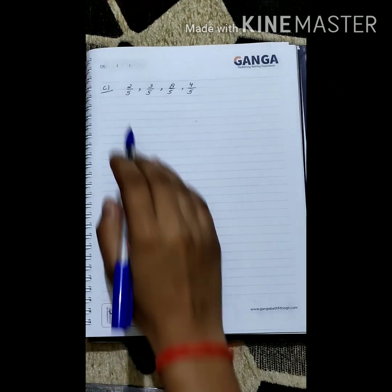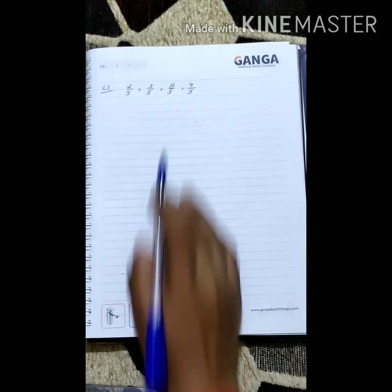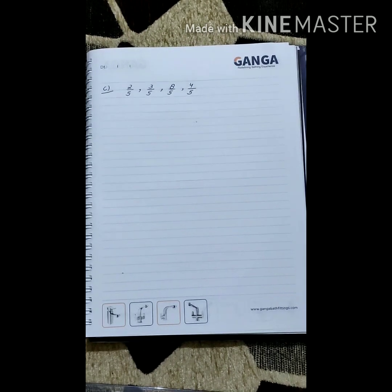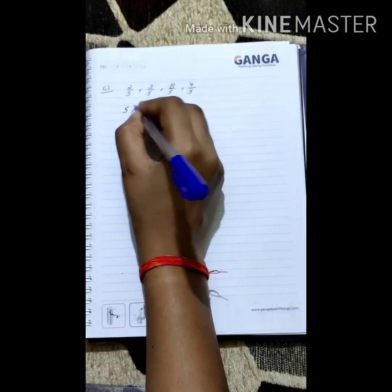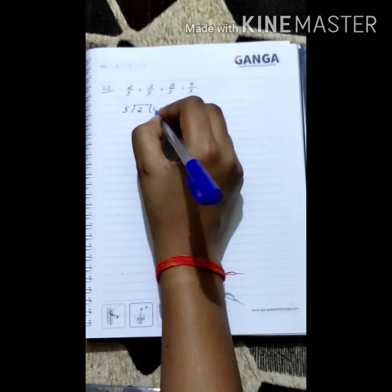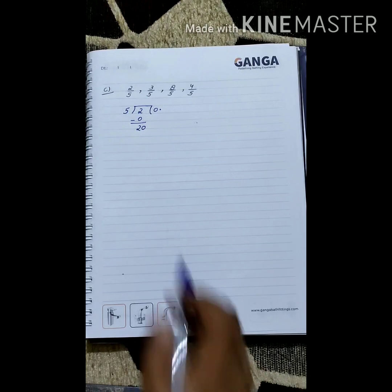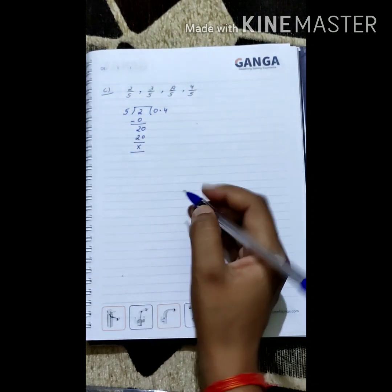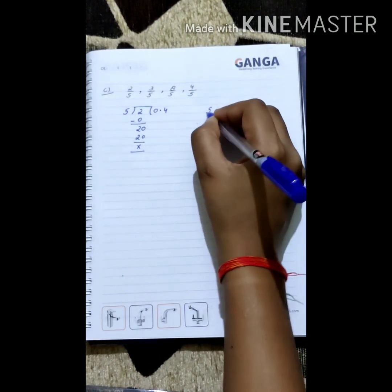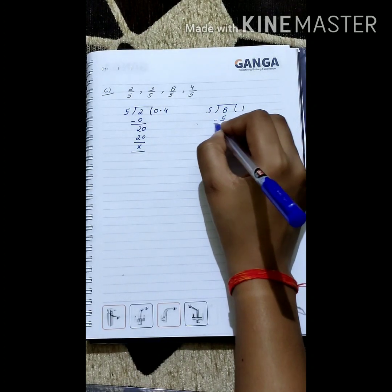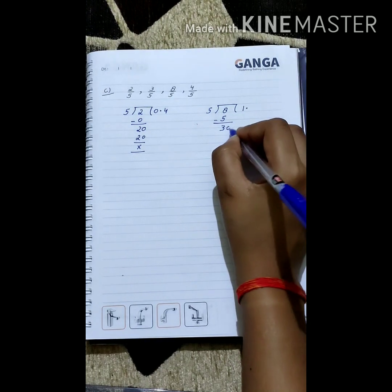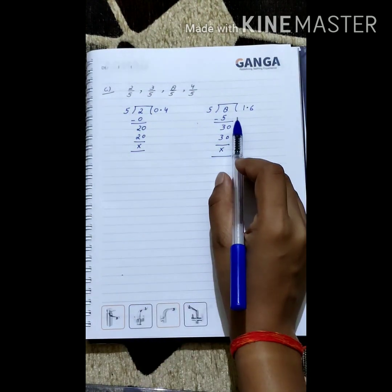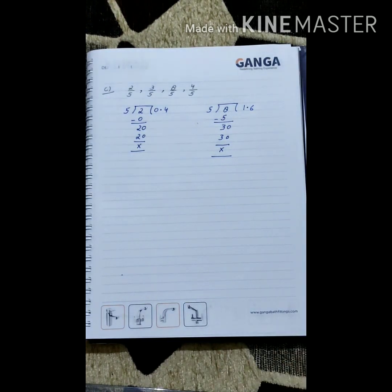Now let's understand part c: 2 by 5, 3 upon 5, 8 upon 5, 4 upon 5. All numbers have the same denominator, 5. We first divide the smallest and greatest number to find the range. Dividing 2 by 5 gives 0.4, and dividing 8 by 5 gives 1.6. Since 0.4 is less than 1 and 1.6 is greater than 1, all these numbers lie between 0 and 2.